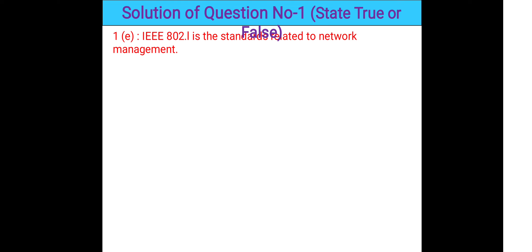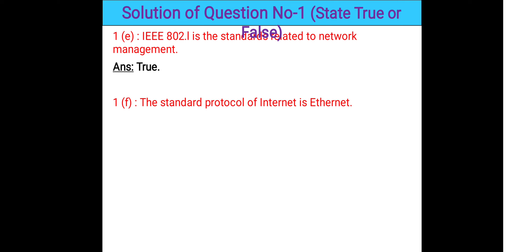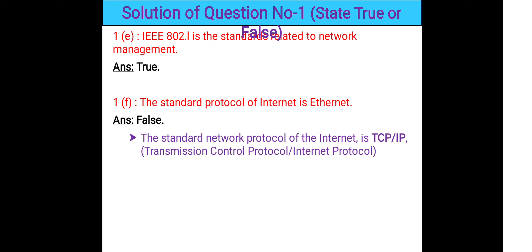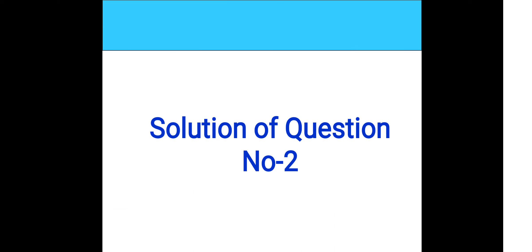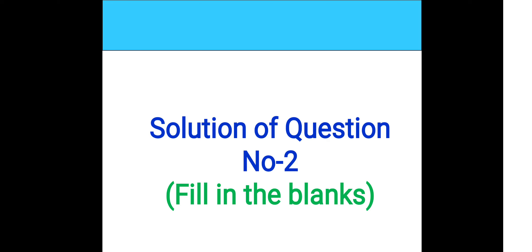Question 1e: IEEE 802.1 is the standard related to network management. This statement is true — IEEE 802.1 manages all networks, which is why it is called the network management standard. Question 1f: The standard protocol for internet is Ethernet. This is false — the standard protocol of the internet is TCP/IP, which stands for Transmission Control Protocol/Internet Protocol. Question 1g: ISDN is a packet switching network. This is false — ISDN is a circuit switching telephone network system, not a packet switching network.